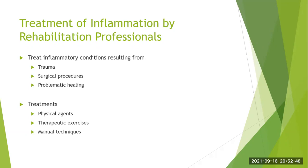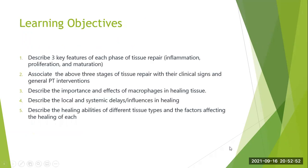The learning objectives for this section — I'm going to split it into shorter lectures — I'd like you to be able to describe three key features of each phase of tissue repair. The three phases are inflammation, proliferation, and return to function, also known as acute, subacute, and chronic. I'd like you to associate those three stages with their clinical signs and general PT interventions. When somebody walks into the clinic, they don't have a sign saying they're in the acute phase, but we can read clinical signs to figure out what stage they're in.